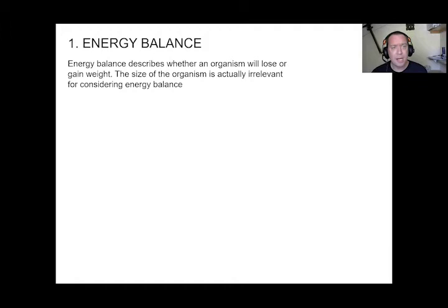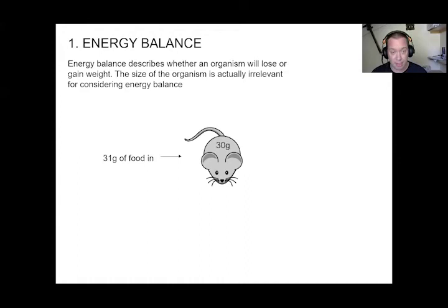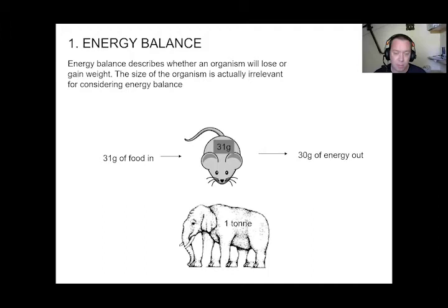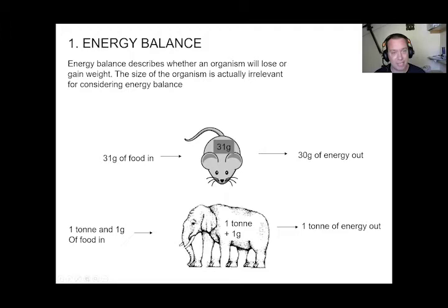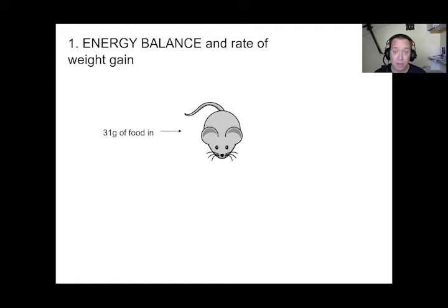Energy balance describes whether an organism will lose or gain weight, and the size of the organism is completely irrelevant for considering energy balance. If you put 31 grams of food into a 30-gram mouse and only the equivalent of 30 grams comes out, you will get a 31-gram mouse. Conversely, with a one-ton elephant, the same logic applies. When assessing energy balance — why things get fat — we do not care how big the organism is.